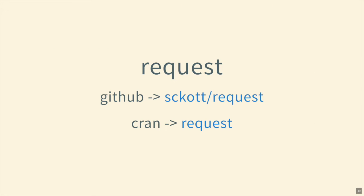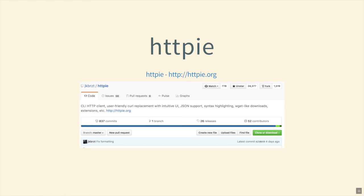This is where the package I've been working on comes in — it's called 'request'. You may have heard of the Python package 'requests', which is why I didn't use that name. The inspiration came from HTTPie, a Python library and command-line tool for making HTTP requests. One of the cool things HTTPie does is make assumptions about the most common things you'll want to do when making an HTTP request — that's the motivation for this package.